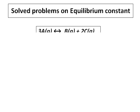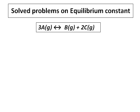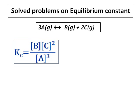We will do some simple questions on equilibrium constant. Before that, we will just recollect what an equilibrium constant is. For the reaction 3A giving you B plus 2C, the equilibrium constant is the concentration of the products divided by the concentration of the reactants. Remember to raise the concentration to the power of its stoichiometric coefficient.